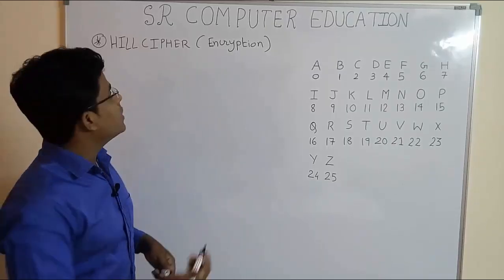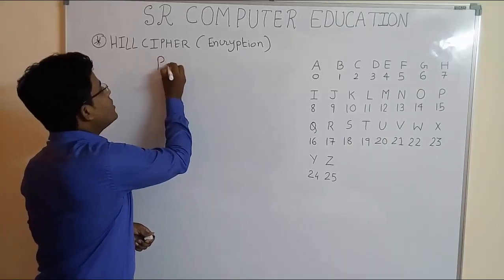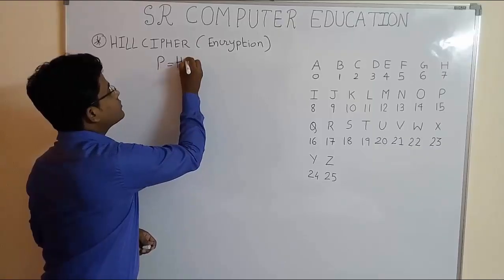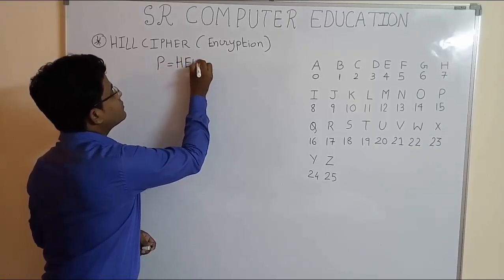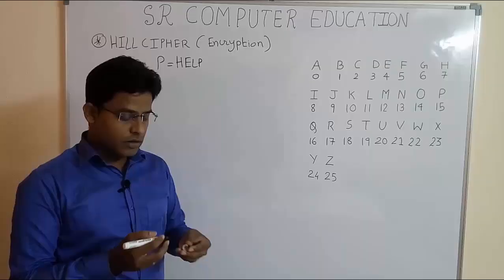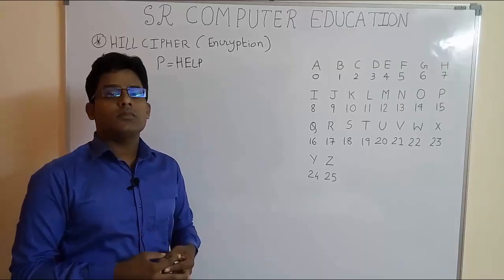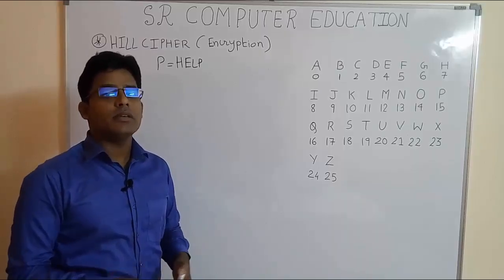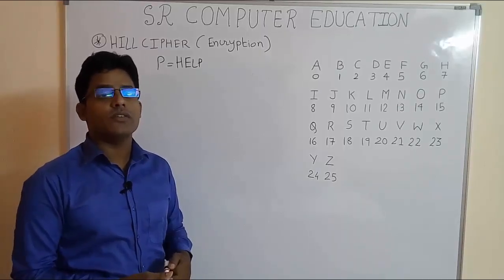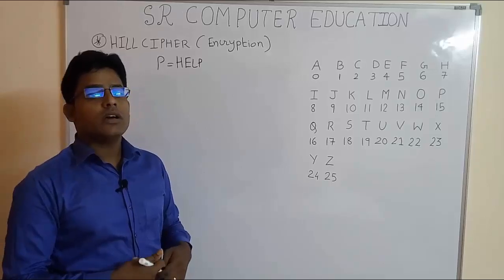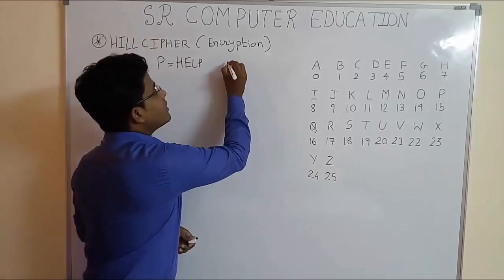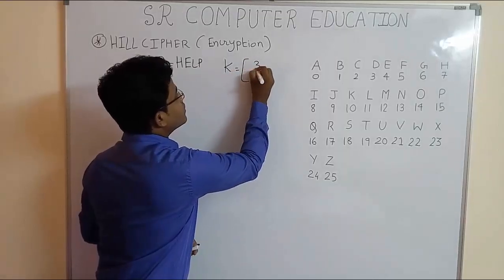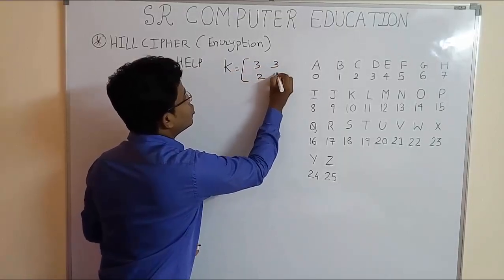So here the plaintext, I am representing plaintext with P, is HELP. In Hill Cipher, key matrix is mostly given in the examination because you cannot take any random key matrix. There are some rules and regulations for the key matrix. So here suppose the given key matrix is K equals 3, 3, 2, 5.